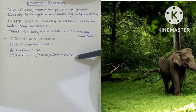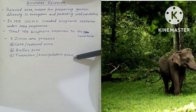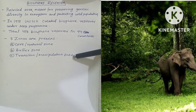The outermost or peripheral part of a biosphere reserve is called the transition zone, where local people's activities are allowed, such as settlement, cropping, recreation, forestry, and other economic uses, without disturbing the ecology.